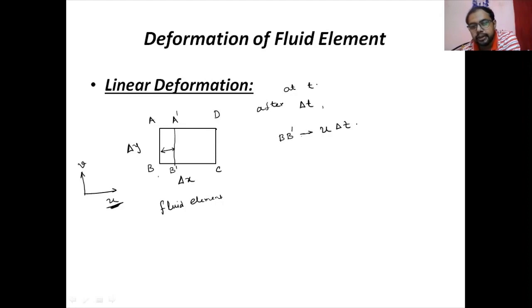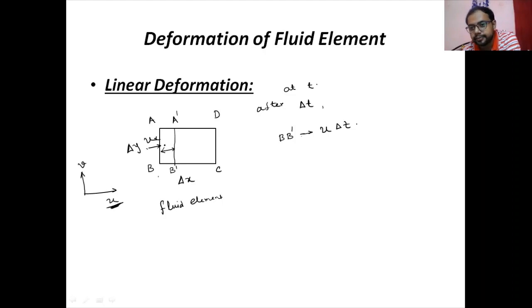What would be the velocity at the other side? Here the velocity is u at position x. But at position x plus delta x, the velocity is u at x plus delta x, because the location has changed.